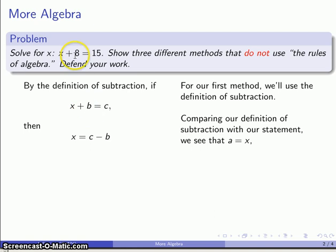I also see that b and 8 are doing the same thing. So I'll replace my b's here and here with 8. And then finally I see that c and 15 are playing the same role. So I'll replace the c's with 15. And I have my definition of subtraction solution. Because I have x plus 8 equals 15, that's what we're starting with, I can immediately say that x is 15 minus 8.